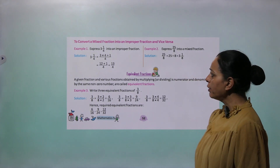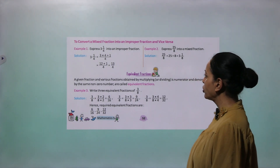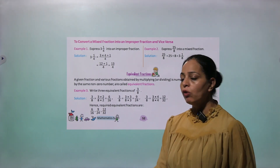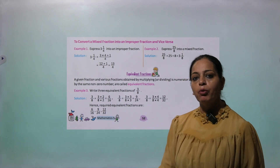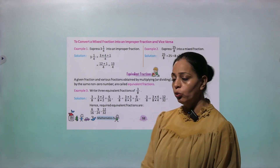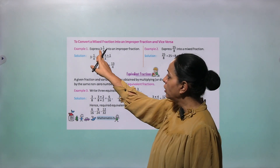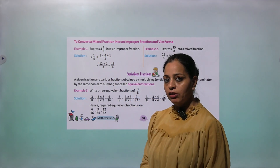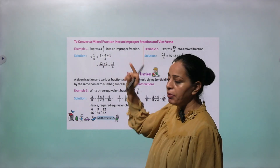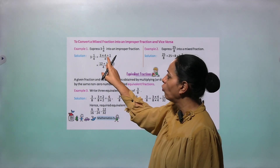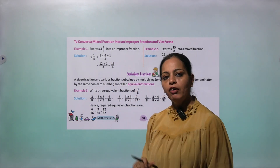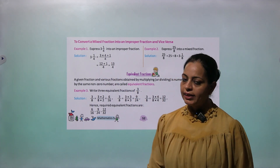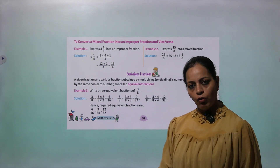To convert a mixed fraction into an improper fraction, see example 1: Express 3 whole 1 by 4 as an improper fraction. The whole part is 3. Multiply 3 by the denominator 4, then add the numerator 1. So it becomes 3 into 4 plus 1, divided by 4 — that is 12 plus 1 by 4, which equals 13 by 4.